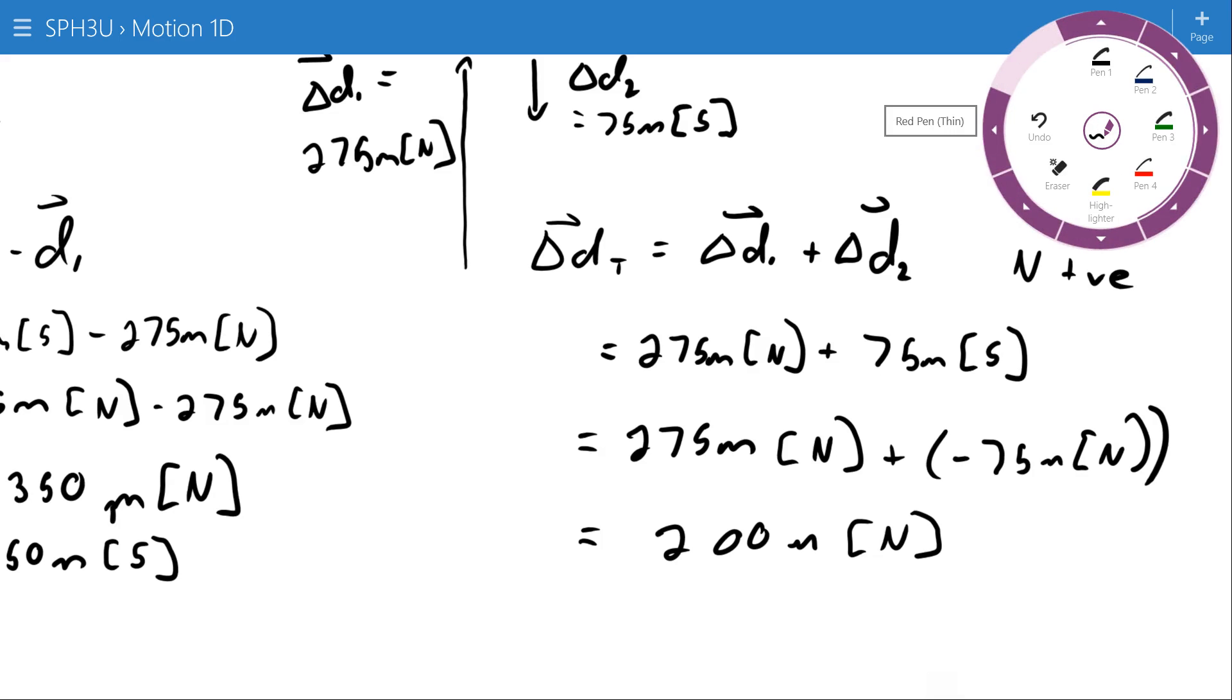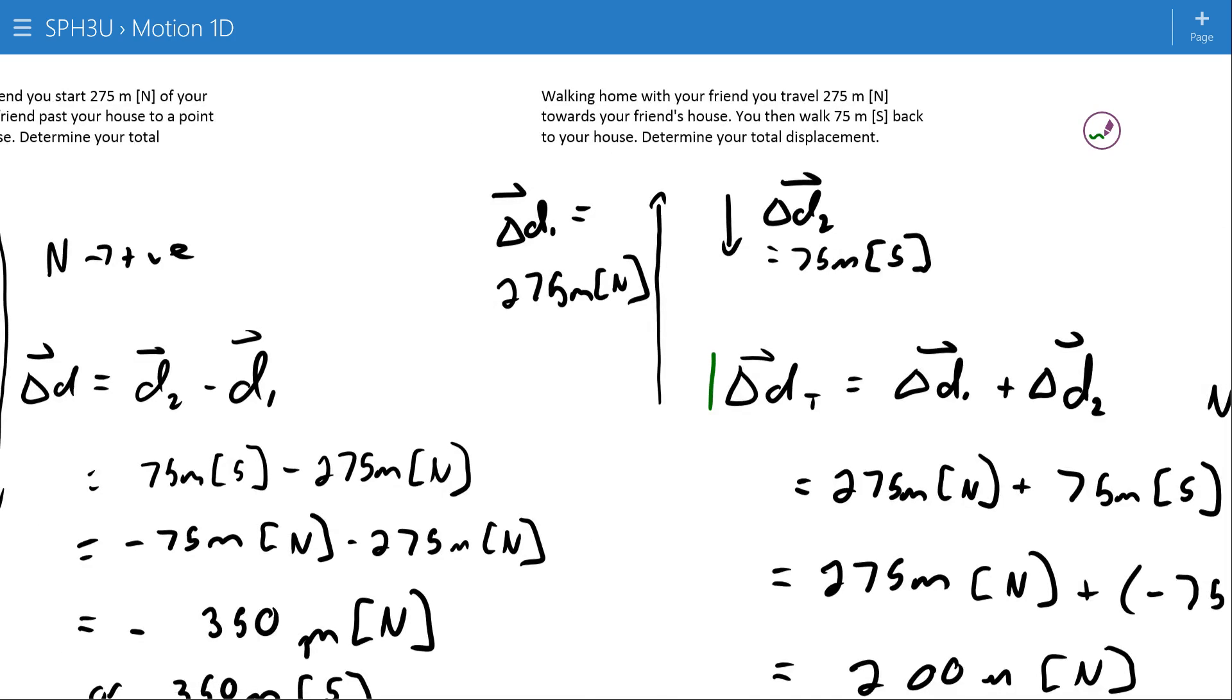If I look on this diagram, I can see that that's this distance right here. That's your actual change, your initial position and your final position, that's your change. You went up 275 and back down 75, and you can see that this is only 200 by looking at the diagram.